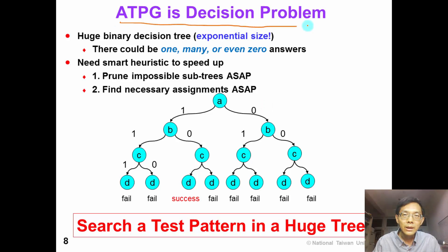ATPG is basically a very large decision problem. In this binary decision tree, in every level, we have 2 decisions. For a variable A, we can either assign it to be 0 or 1. Every time we split this decision, the tree would be doubled. So the decision tree is exponential in size.